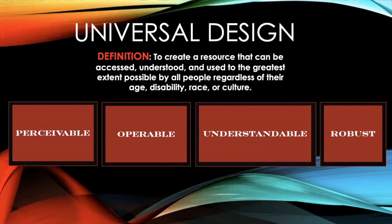To begin, let me explain exactly what I mean when I say accessible. The term accessibility refers to being in compliance with the principles of universal design. Universal design means to create a resource that can be accessed, understood, and used to the greatest extent possible by all people regardless of their age, disability, race, or culture. Simply put, universal design means that it can be used by everyone.